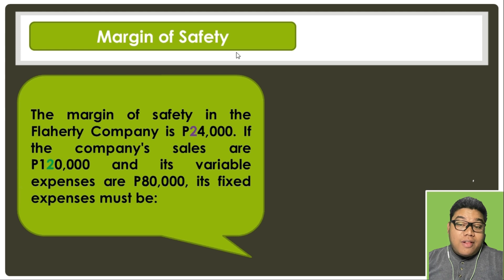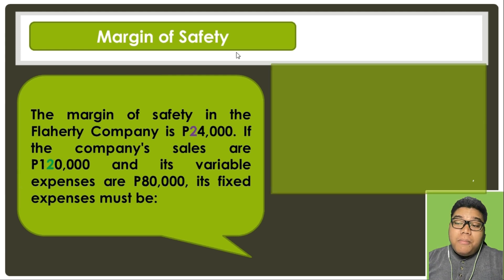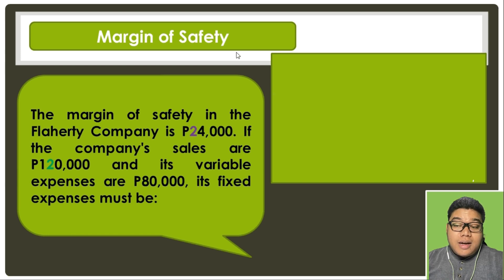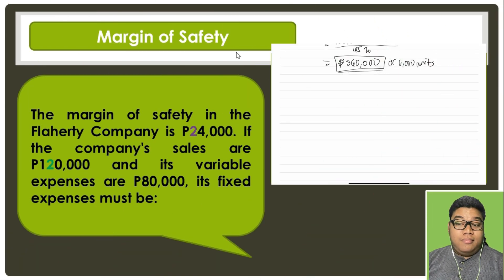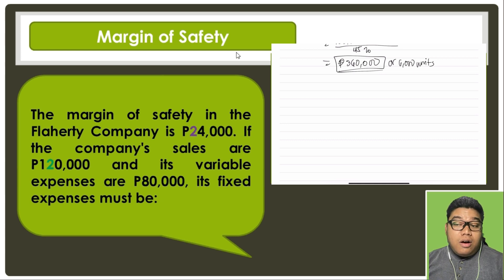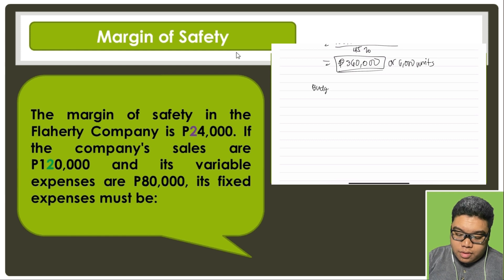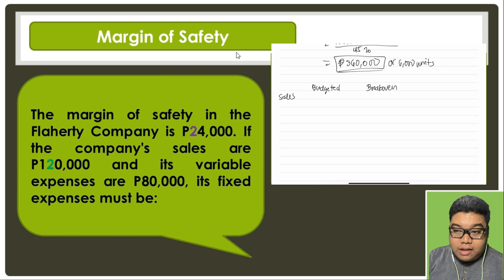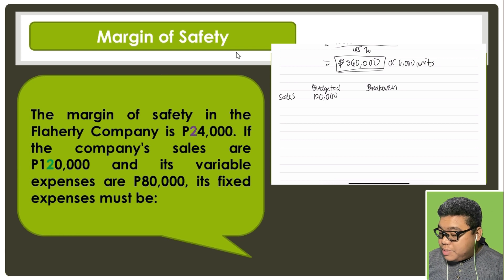Let's answer this problem. The margin of safety in the Flaherty Company is 24,000. If the company's sales are 120,000 and its variable expenses are 80,000, fixed expenses must be... Currently the company has sales of 120,000. Let's write that down for budgeted and break-even. For sales we have 120,000, so break-even sales must be 120,000 minus 24,000, which is 96,000.